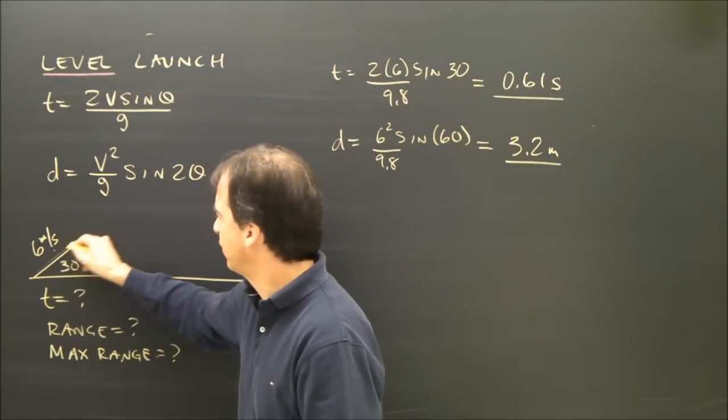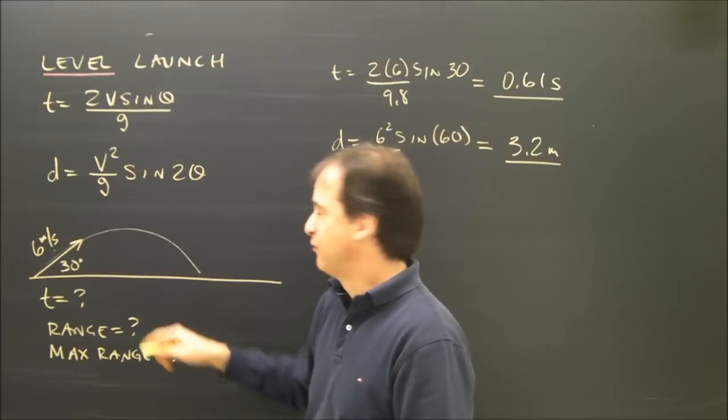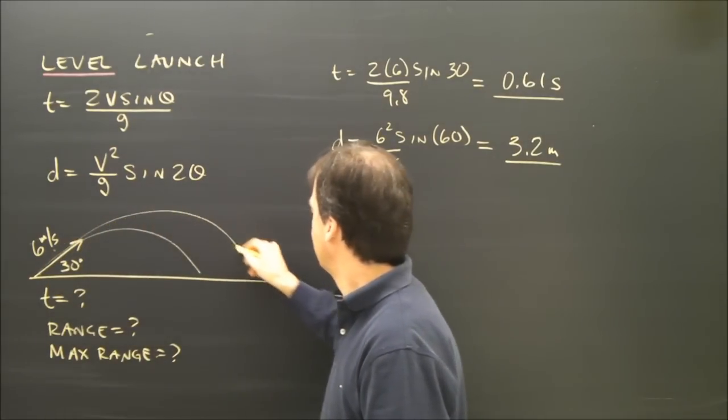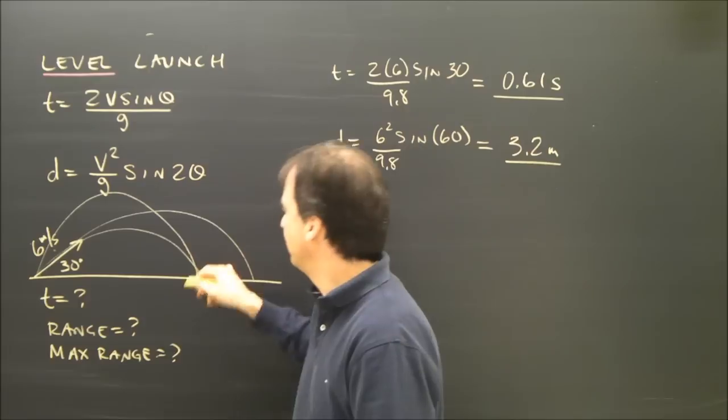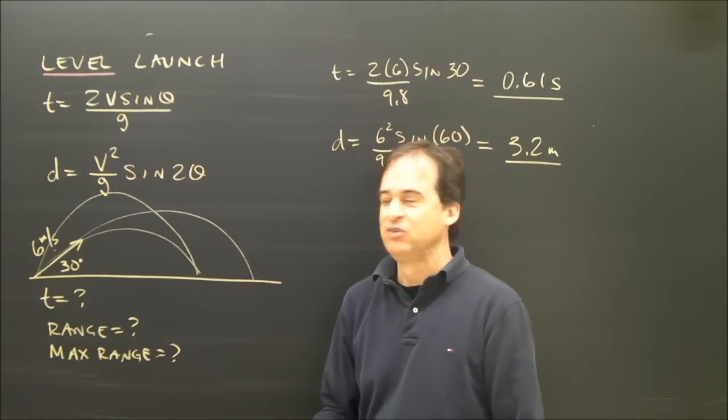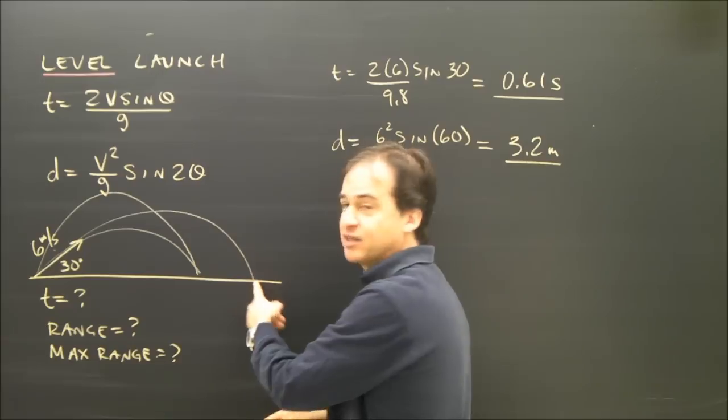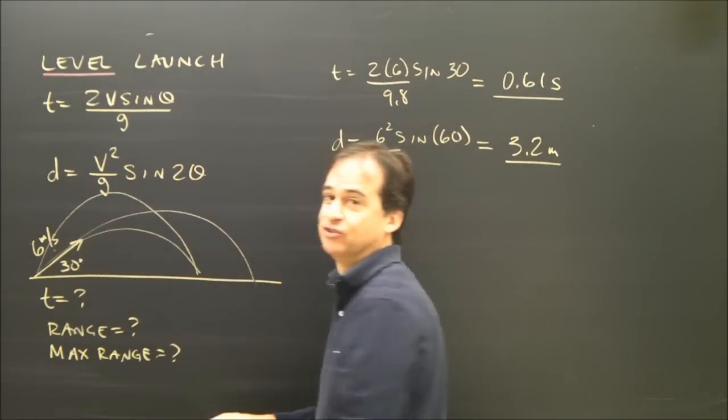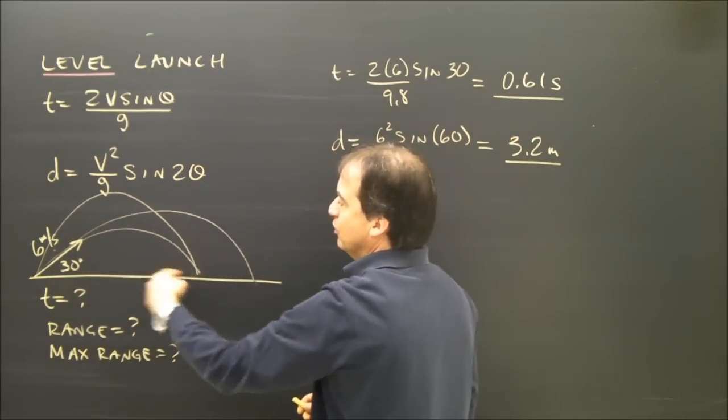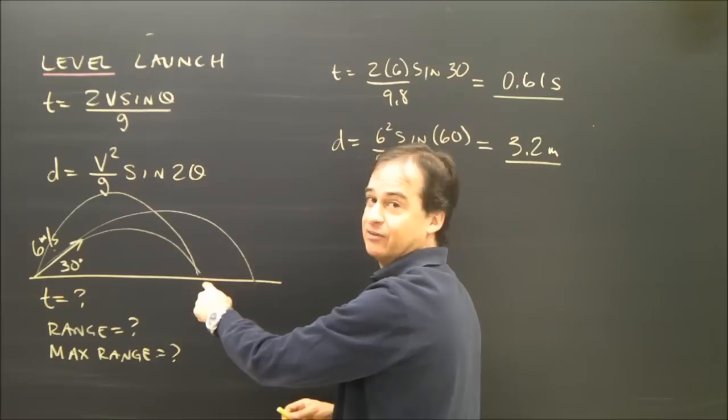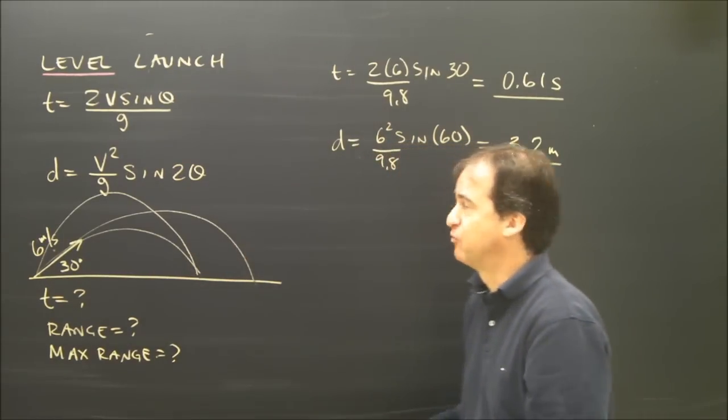If you throw it at 30, it'll land here. If you throw it at 45, it'll land further. If you throw it at an angle greater than 45, it will land back somewhere there. So for anything less than the maximum range, there's actually two angles you can use. I can make a ball land here by throwing it up and over or straight across like that. But the maximum range is at 45 degrees.